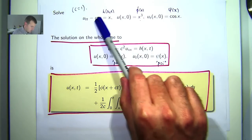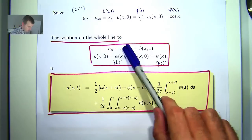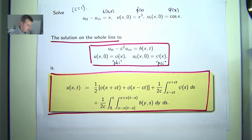Okay, so the coefficient of u sub xx is 1, c is positive, c squared is 1, so c is 1.